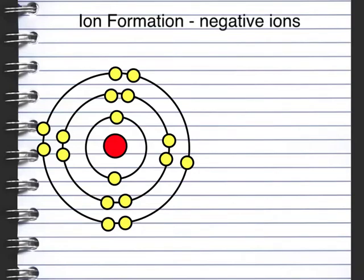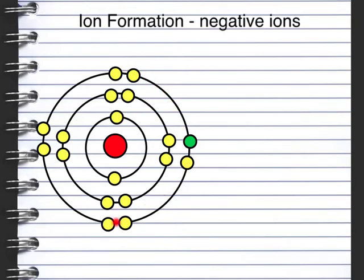Whereas positive ions lose electrons, negative ions will gain electrons. Here we've got something from group 7, which is the halogens. We can tell this because we've got 7 electrons in the outer shell. An electron that perhaps we've lost from one of the group 1 elements will then be attracted and join up to fill that outer shell. Negative ions form because we've gained extra electrons, giving a charge of minus 1.